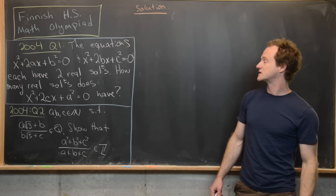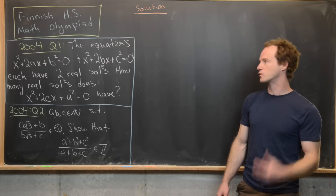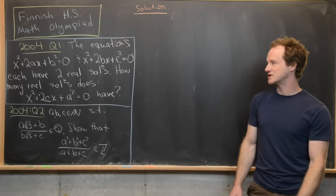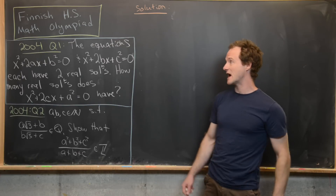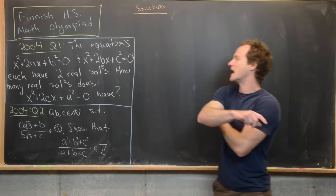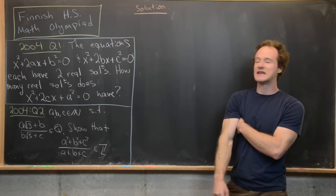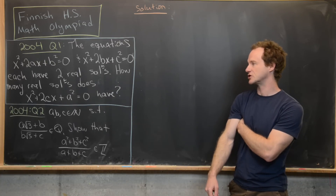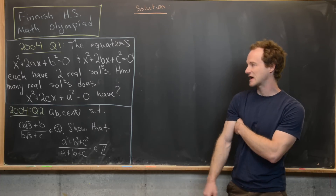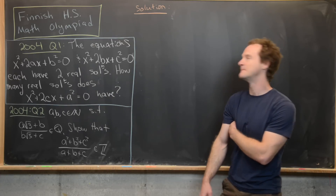Let's go ahead and look at a solution to question one. It has to do with roots of a quadratic polynomial. We've got the equations x² + 2ax + b² = 0 and x² + 2bx + c² = 0, and we know that they each have two real solutions. The question is: how many real solutions does x² + 2cx + a² = 0 have?